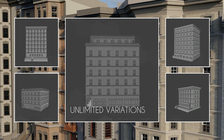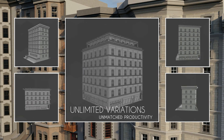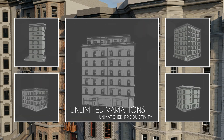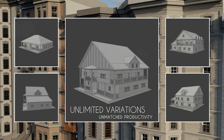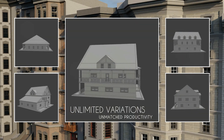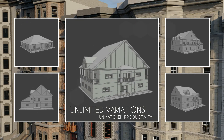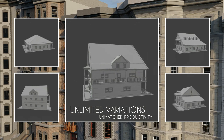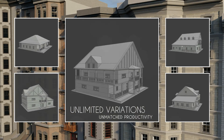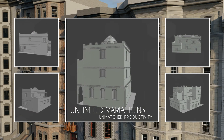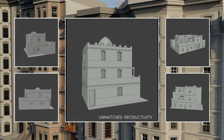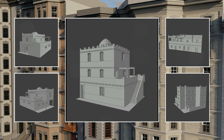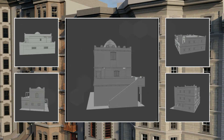We can combine them in infinite ways to create models as complex as desired. Variation is embedded into our models, so every time you render a 3D model, you get a new and unique result, regardless of architectural style.